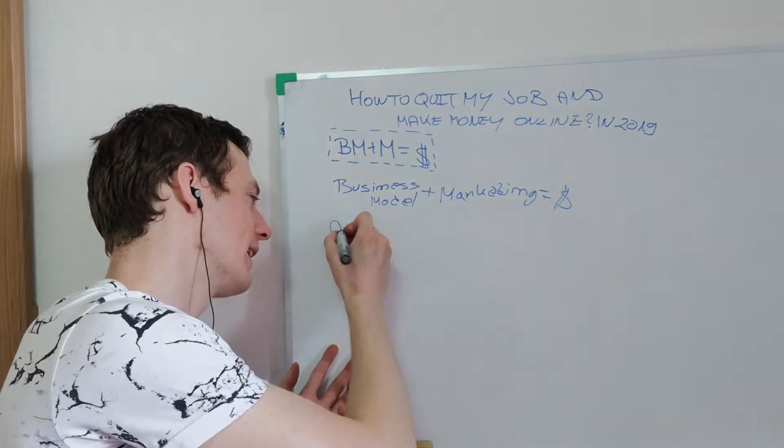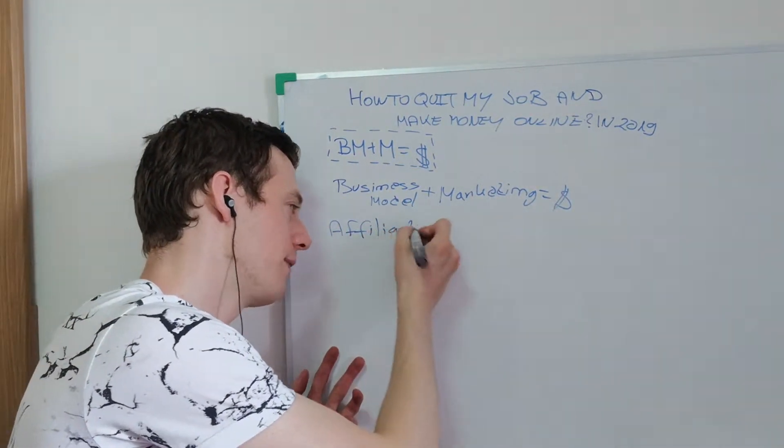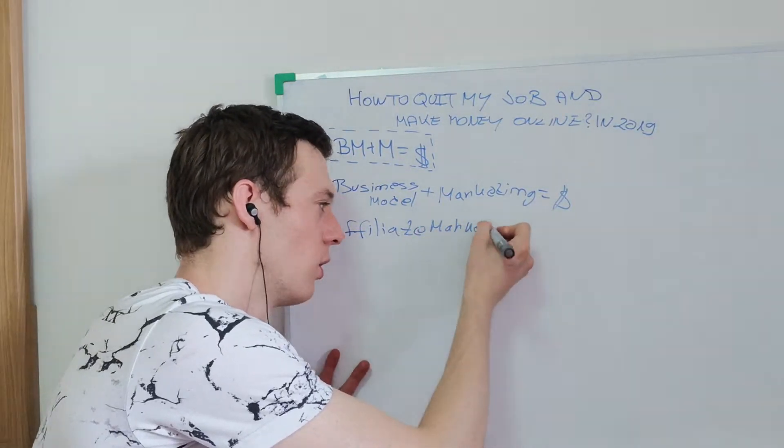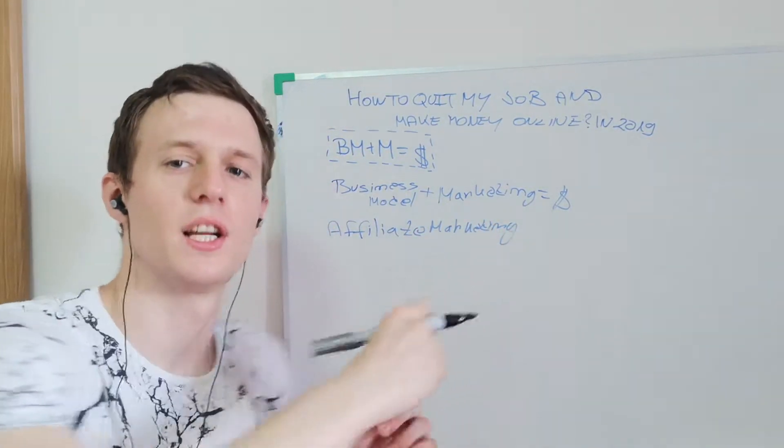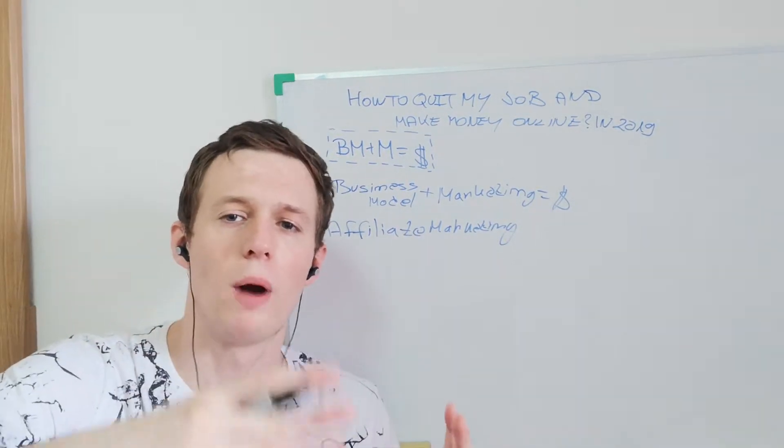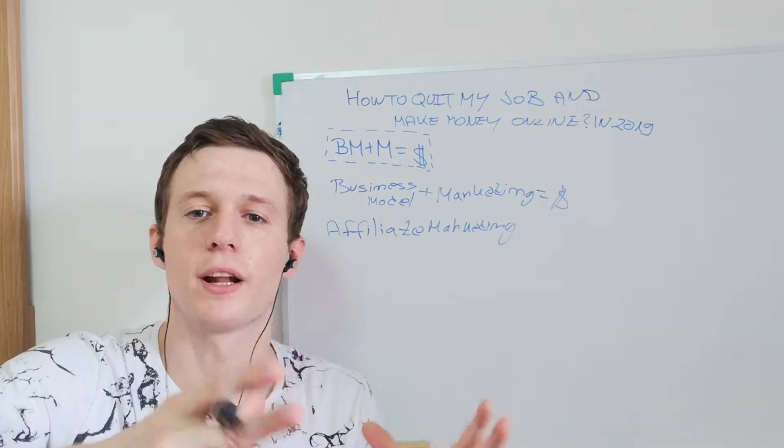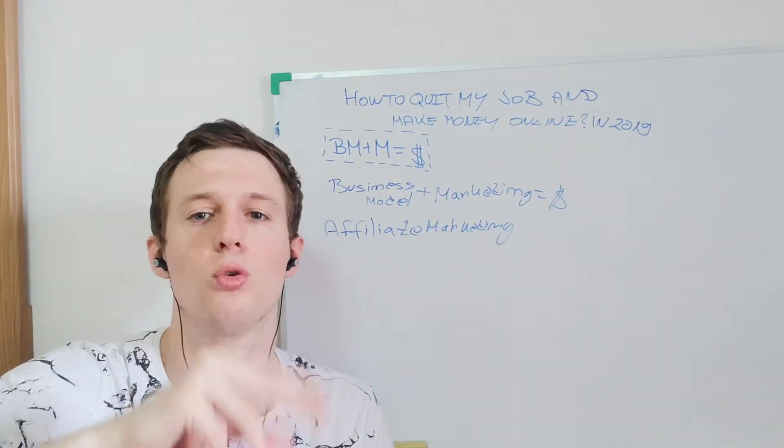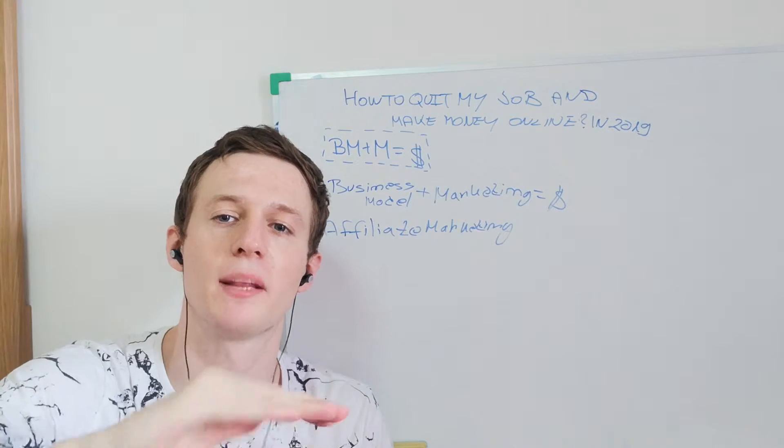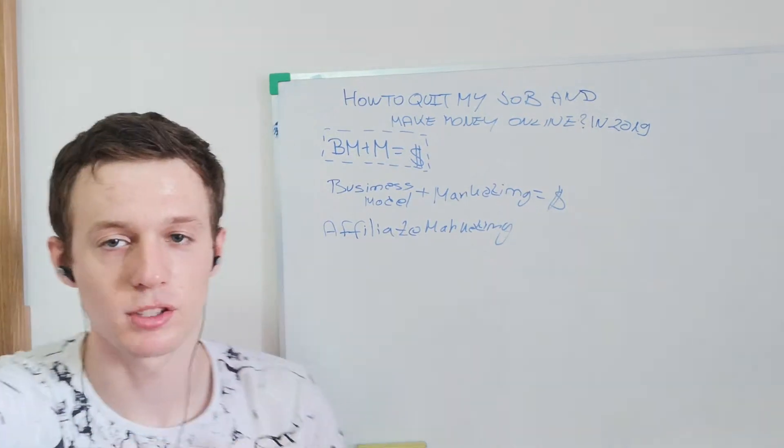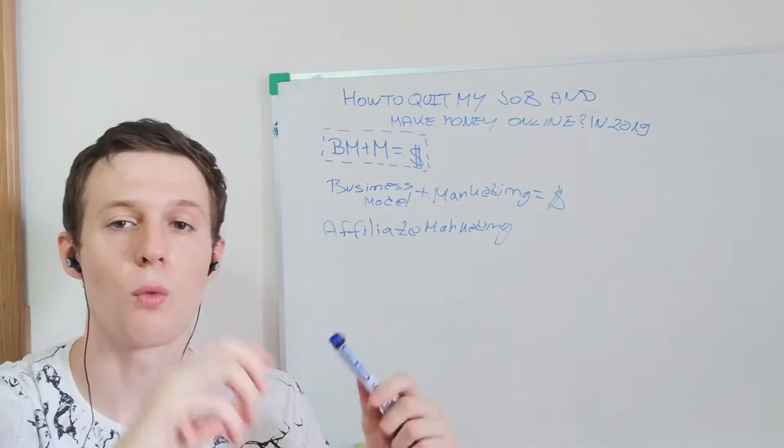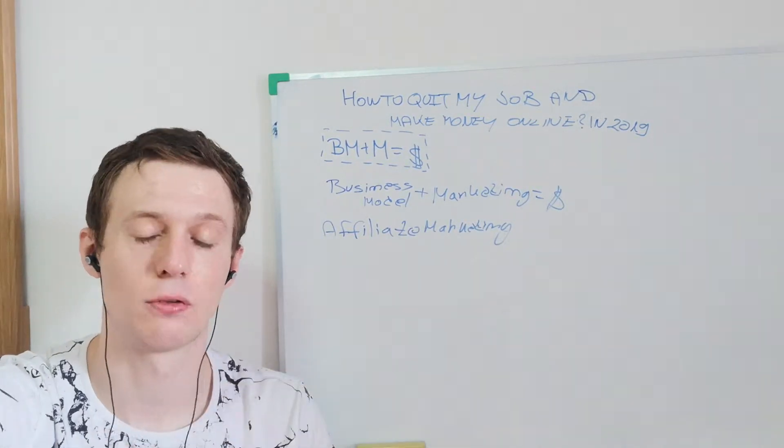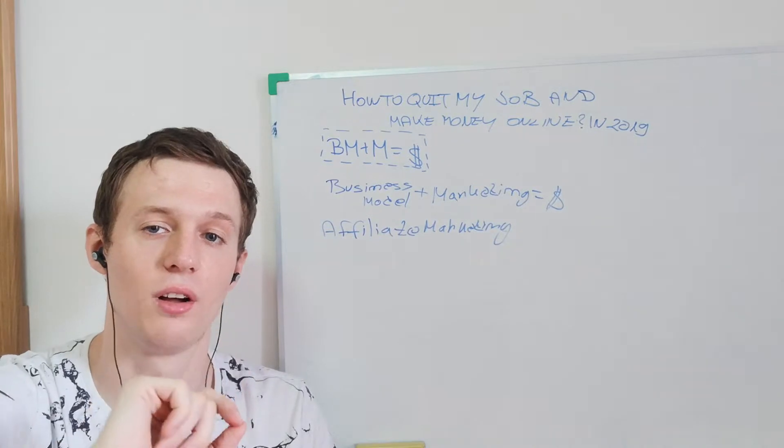So what is affiliate marketing? Affiliate marketing is you simply go and you promote other people's products. There are different information products someone else has already created. So all we have to do is we need to get sales. We need to get people to buy these products. We recommend those products, we get sales, and we get paid a certain commission: 40, 50, 60, 70, up to 90% commission for every single sale.